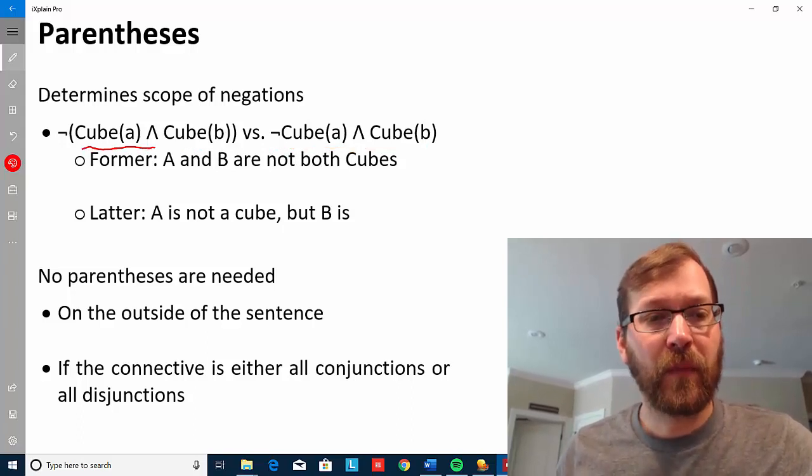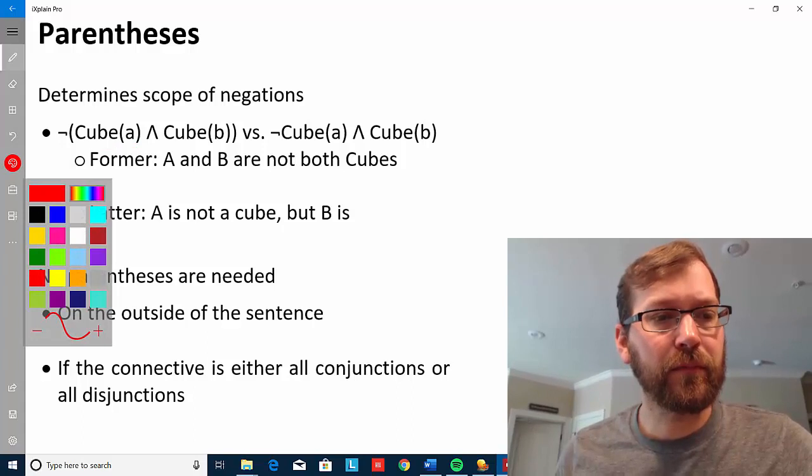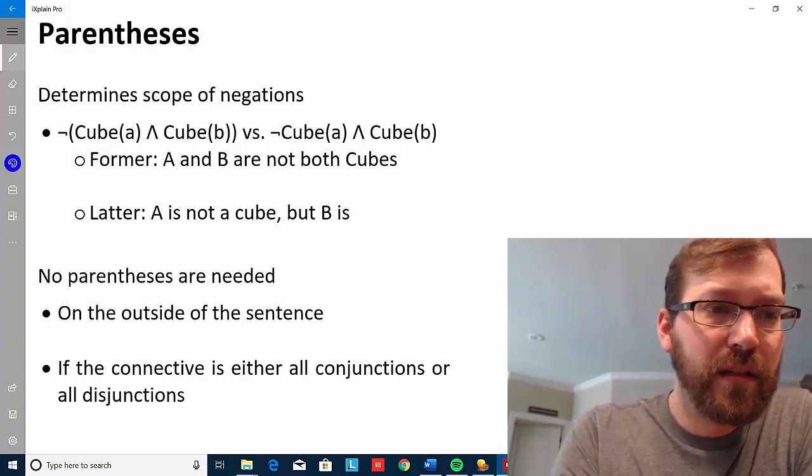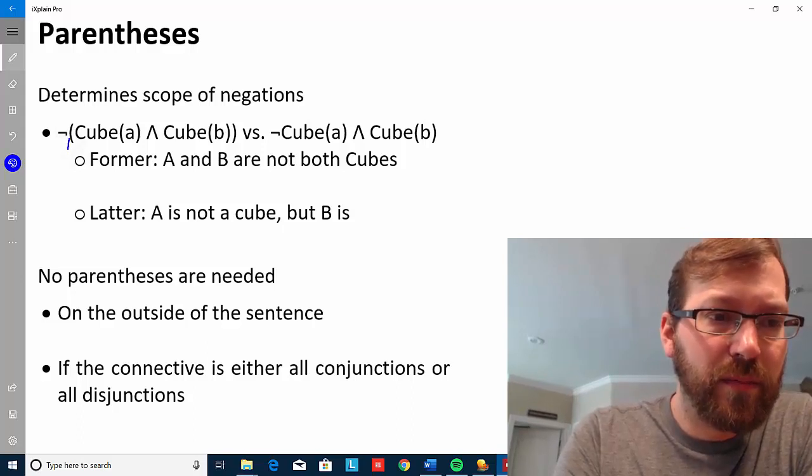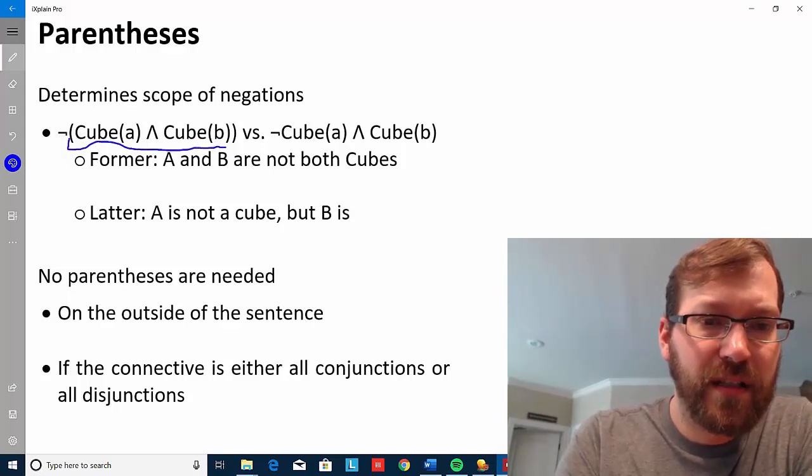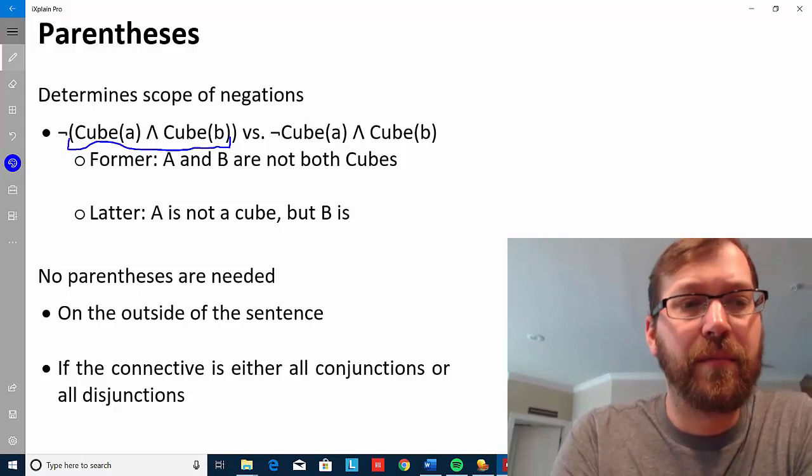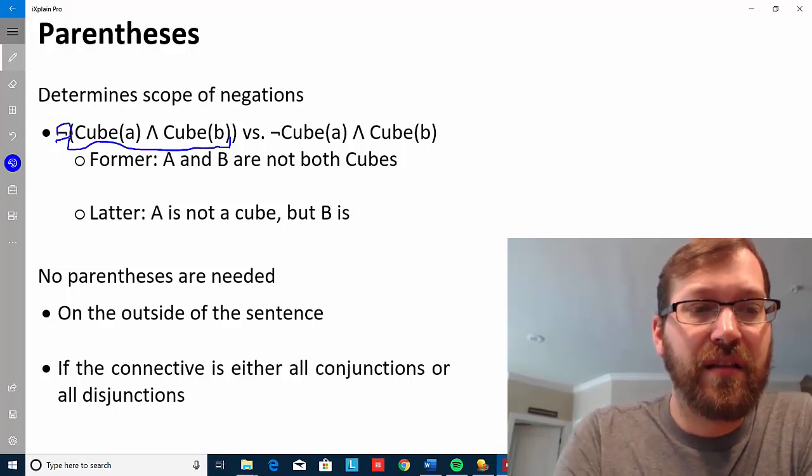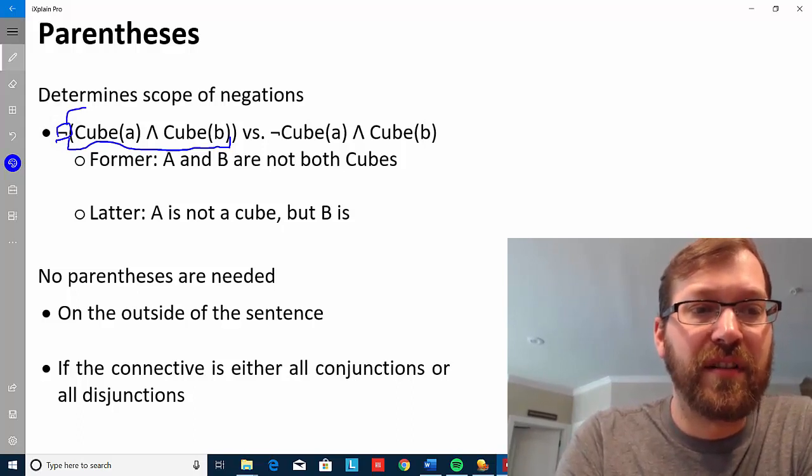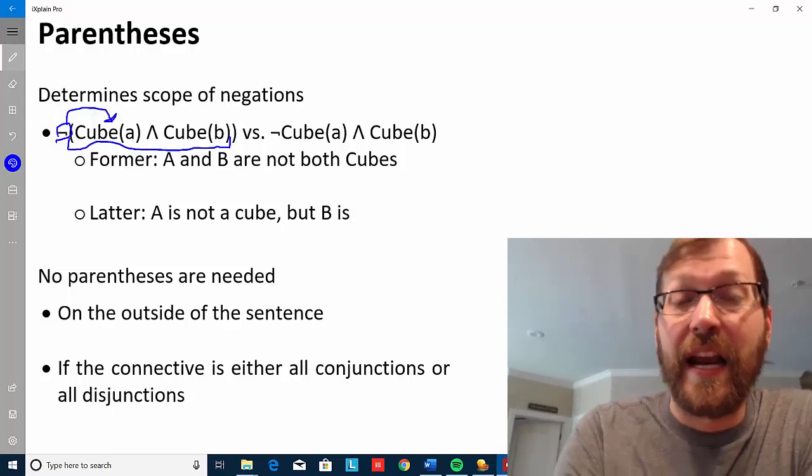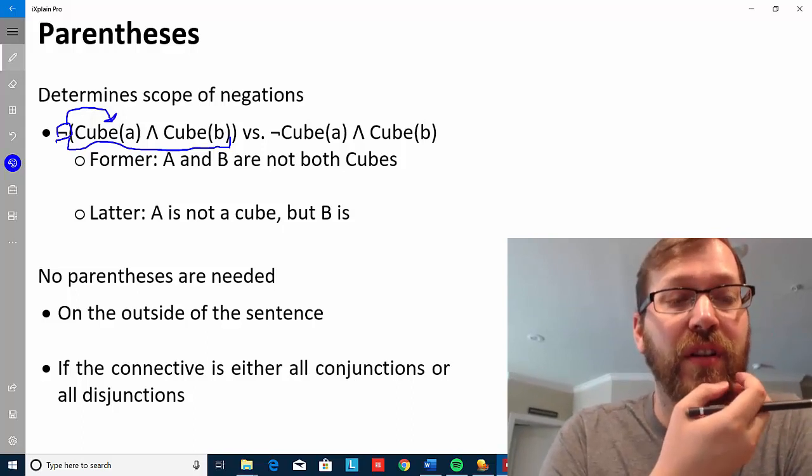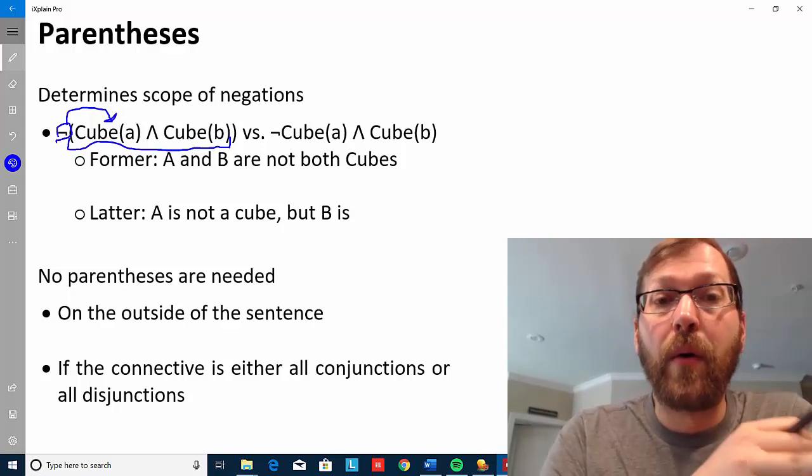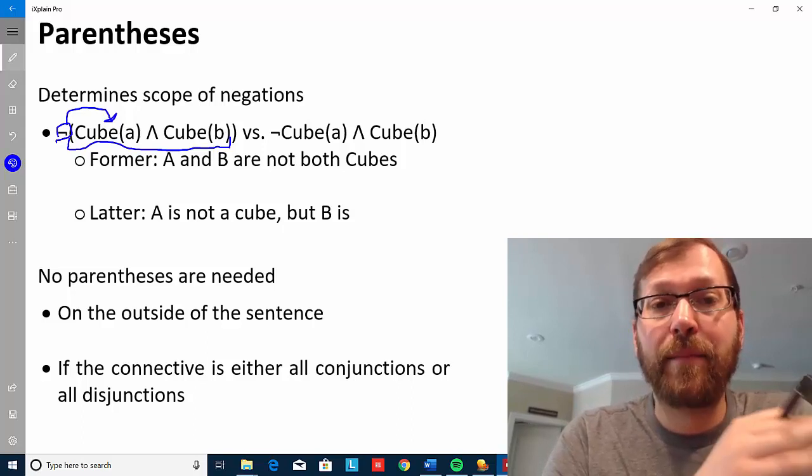Well, this parentheses is letting us know that because the negation is out in front of it, it's the entire sentence within the parentheses that we're negating, that we're saying is false. So what's being said is false here is both A being a cube and B being a cube.